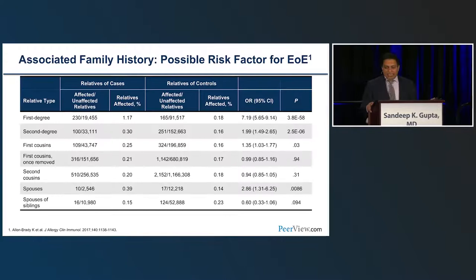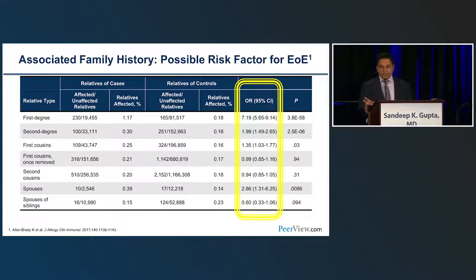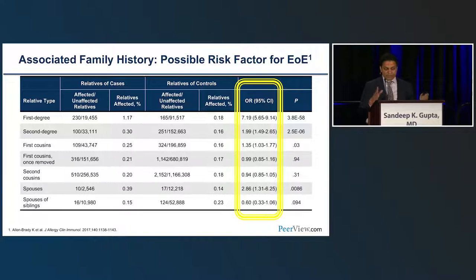Regarding family history, first-degree relatives of someone with EOE have an odds ratio of seven times the normal population for developing EOE — possibly due to genetics. However, spouses have about a three times odds ratio, which is not a genetic issue but suggests an environmental component. Even sibling spouses carry some risk. Being in the same environment as a person with EOE every day confers an increased risk, suggesting environment plays a significant role.